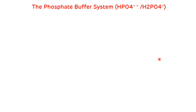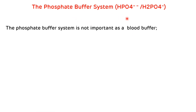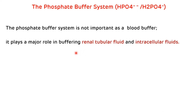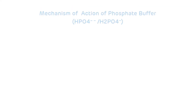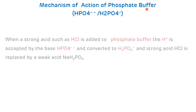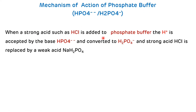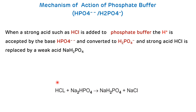The phosphate buffer system is not as important as a blood buffer, but plays a major role in buffering renal tubular fluid and various intracellular fluids. When a strong acid like HCl is added to the phosphate buffer, the H+ ion is accepted by the base HPO4²⁻, converting it to H2PO4⁻, so the strong acid HCl is effectively converted to the weak acid NaH2PO4.